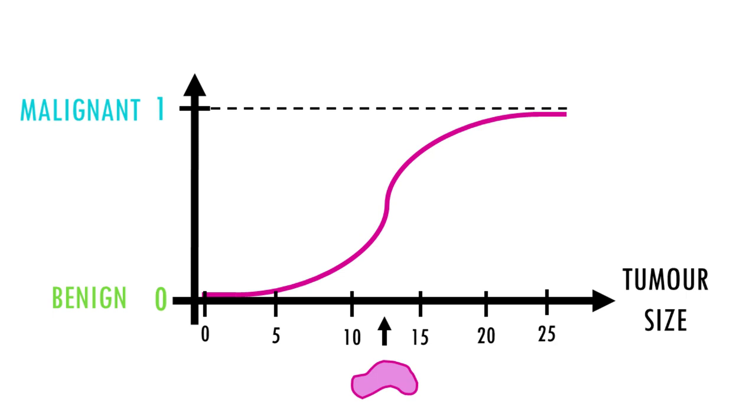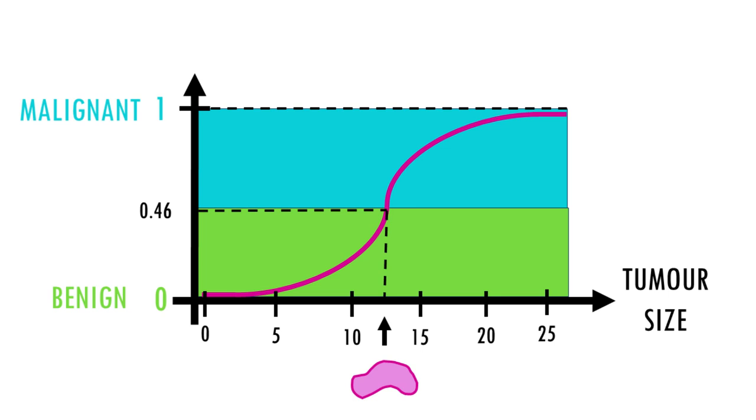For example, this malignant tumor has a probability of 0.46. With a decision threshold of 0.5, we should classify it as benign. But to be honest, 0.46 is very near 0.5. To make sure we don't misclassify malignant tumors as benign, for example, if we're taking a test at the hospital, we might lower the threshold to 0.3. Now, we might misclassify some benign tumors as malignant, but there's less chance of misclassifying a malignant tumor as benign.